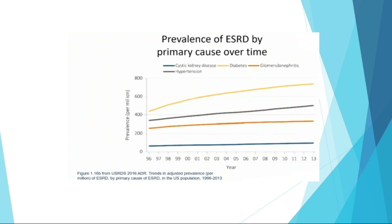This slide talks about the prevalence of end-stage renal disease by primary cause over time. From 1996 to 2013, there is an increase in the prevalence of end-stage renal disease. You can see that diabetes is the primary cause. Cystic kidney disease, hypertension, and glomerulonephritis all increase slowly, but not as much as diabetes.